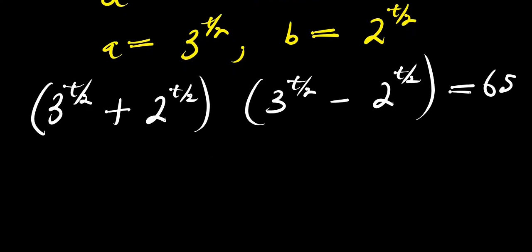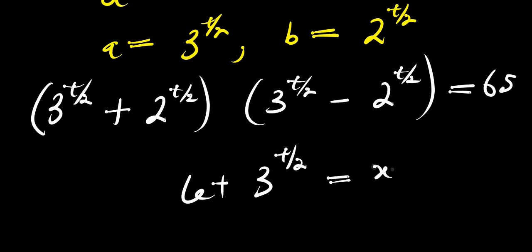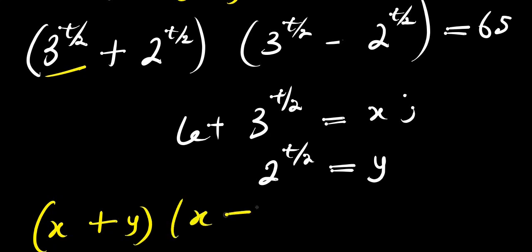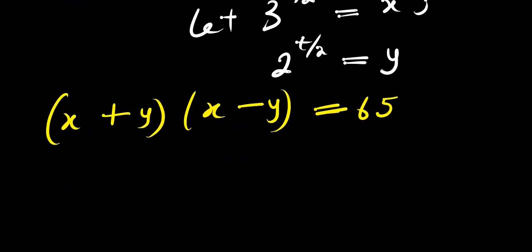Let 3 power t over 2 equal x, and 2 power t over 2 equal y. We use these substitutions to shorten the equation. So we are going to have (x plus y) times (x minus y) equals 65.